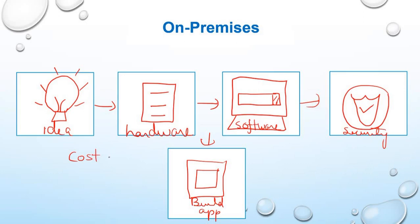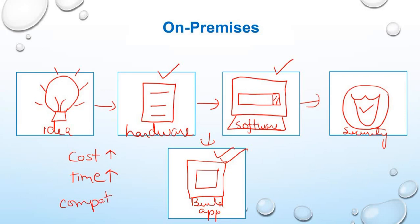So you see the number of steps involved from the idea to finally building the app. The cost is more because you have to install hardware, software, security, and networking — you have to take care of so many things. It takes a lot of time, and basically all the focus is on the low-level infrastructure resources, with less focus on the actual application itself. That's the point where you don't get the competitive advantage — you cannot differentiate your application from competitors.